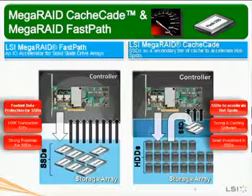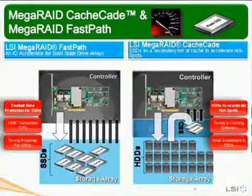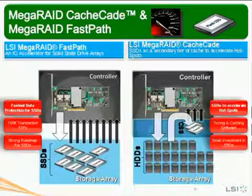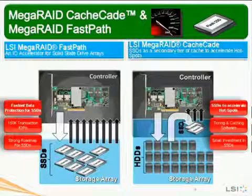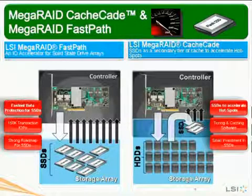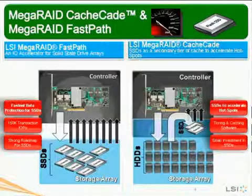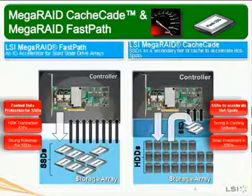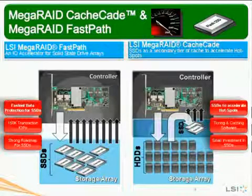So what is MegaRay Cascade and MegaRay FastPass? MegaRay FastPass, as you can see in the diagram on the left, is a high-performance I/O accelerator for solid-state disk drive arrays connected to a MegaRay controller. The solid-state drives are configured as a data array connected directly to the controller. This is the fastest data protection implementation for SSD devices on the market today.